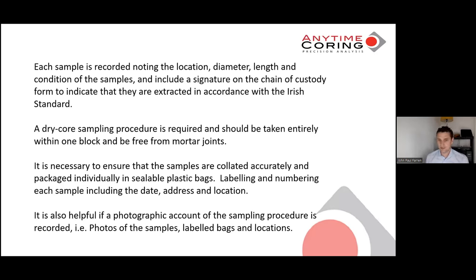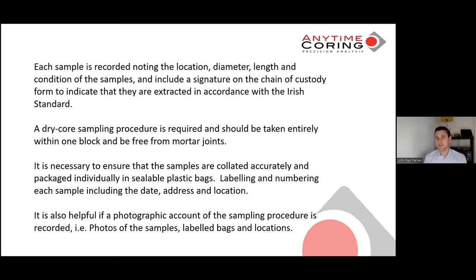It is necessary to ensure that the samples are collated accurately and packaged individually in sealed plastic bags, labelling each sample with the date, address, and location. It is also helpful to have a photographic account of the sampling procedure. When we take the sample, we put it into the bag — which is marked with the sample number — hold that in front of the sampling location, and make sure we have photographic evidence: one up close and one from the full elevation of the house. This is very handy for the geologist.